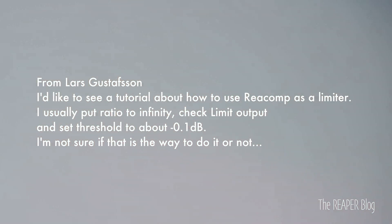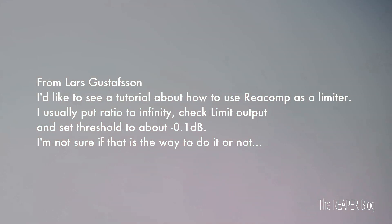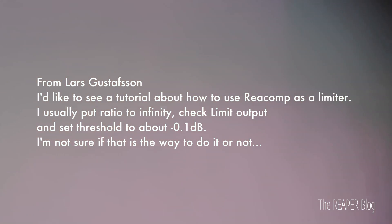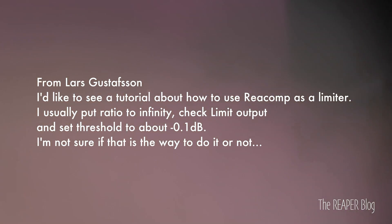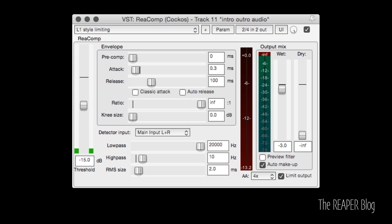The last question comes from Lars Gustafsson: I'd like to see a tutorial on how to use Reacomp as a limiter. I usually put ratio to infinity, check limit output, and set threshold to about minus 0.1 dB — I'm not sure if that's the way to do it or not. That's basically what you need to do. You also need to look at the RMS value. If you want to use it like a brick wall limiter, something like Waves L1, you want the auto gain turned on as well. So as you lower the threshold, it pushes up the output level. I have a preset for Reacomp that's very similar to the L1 when used in that way.